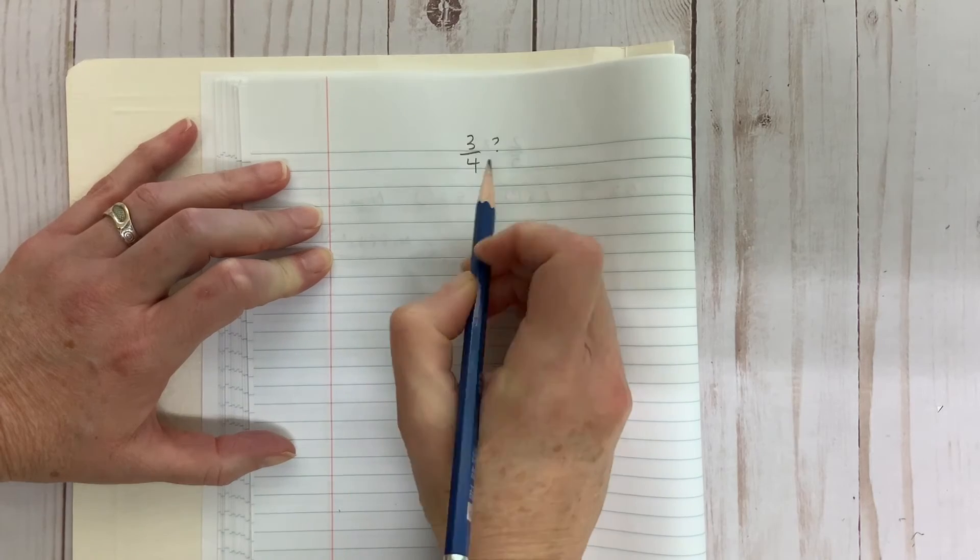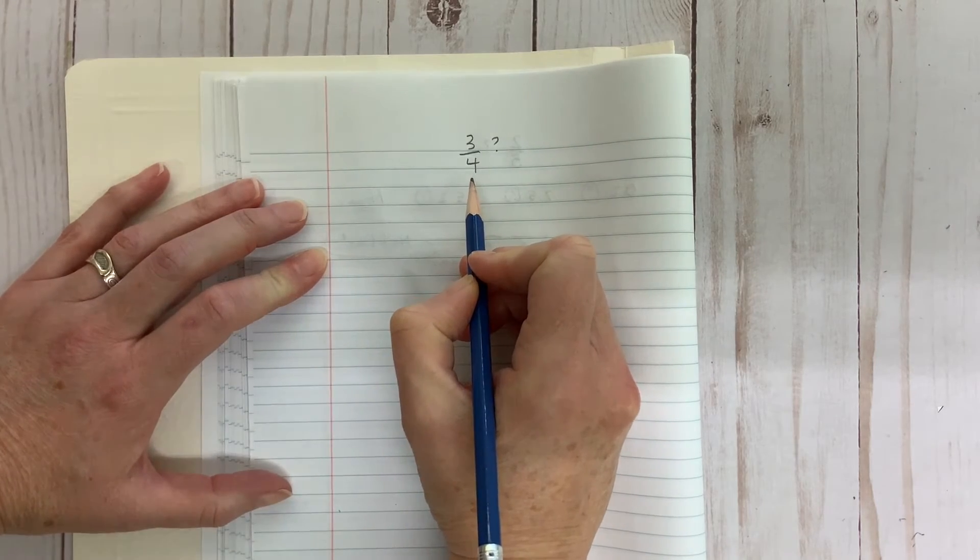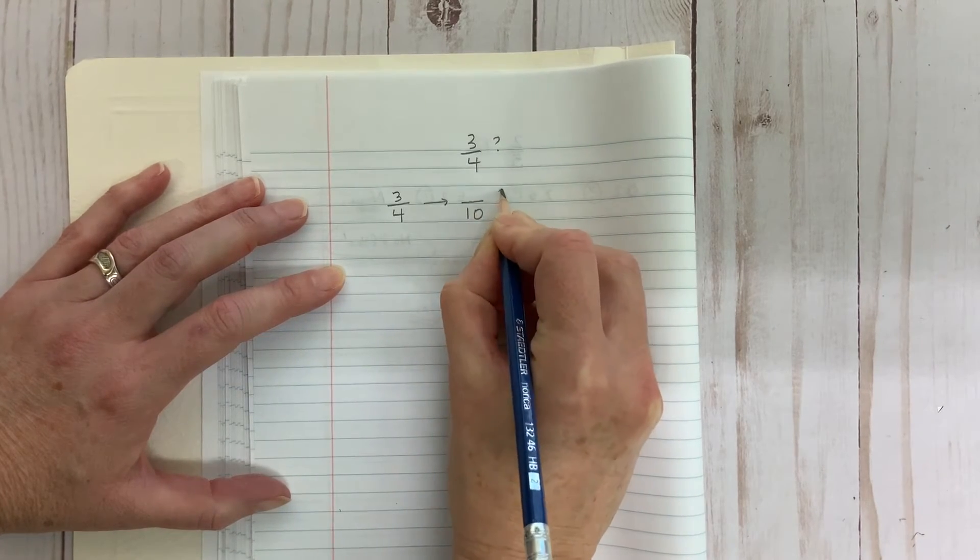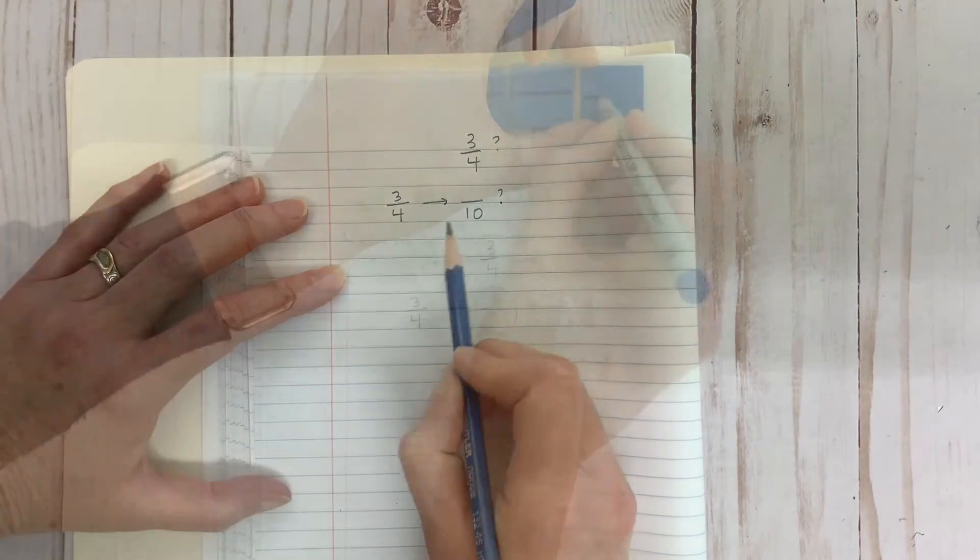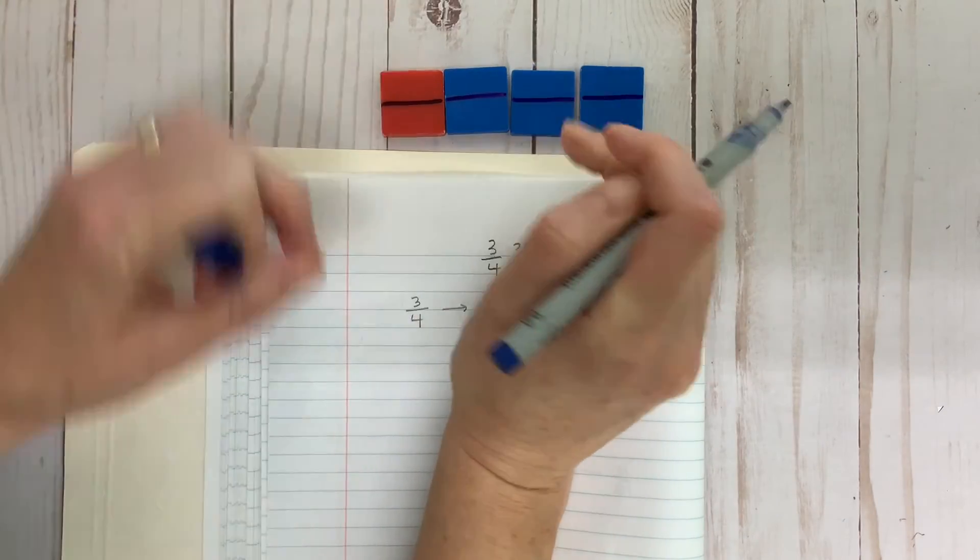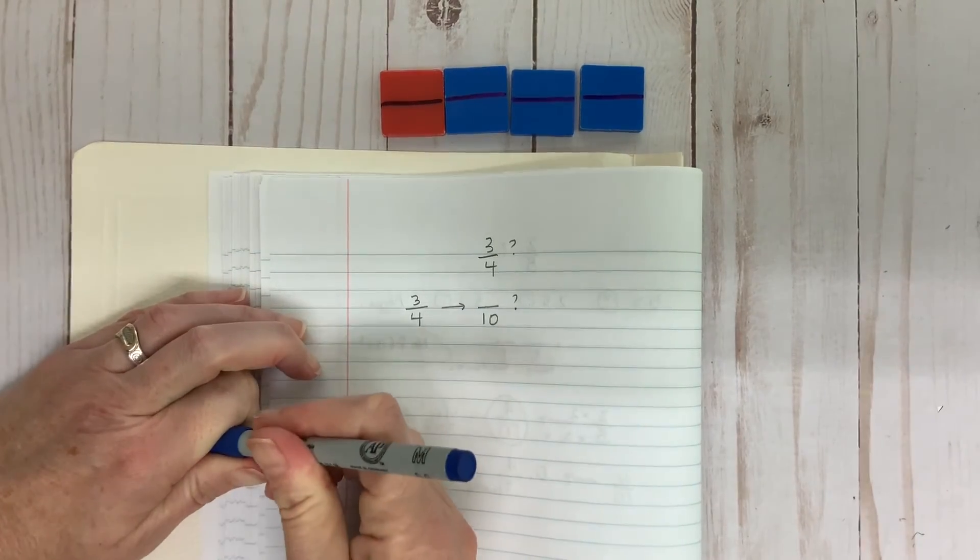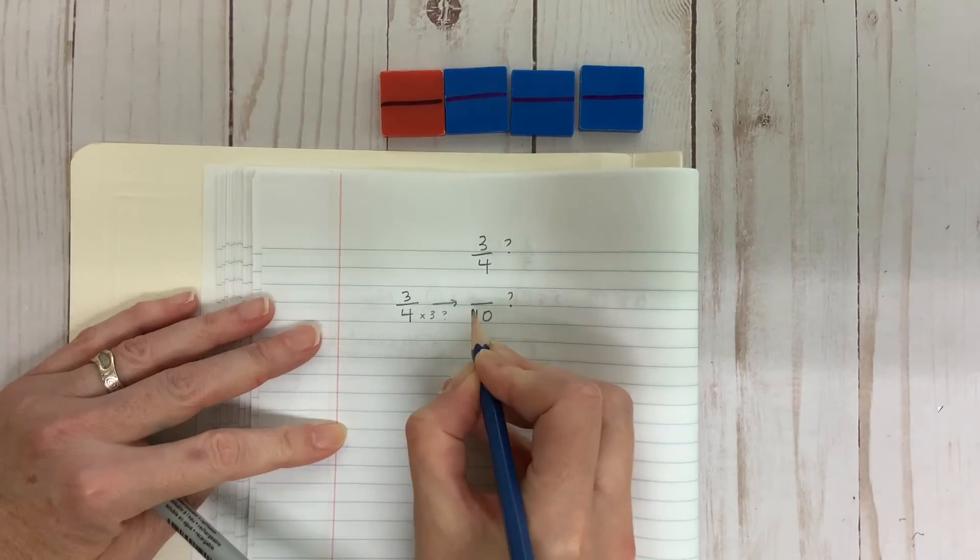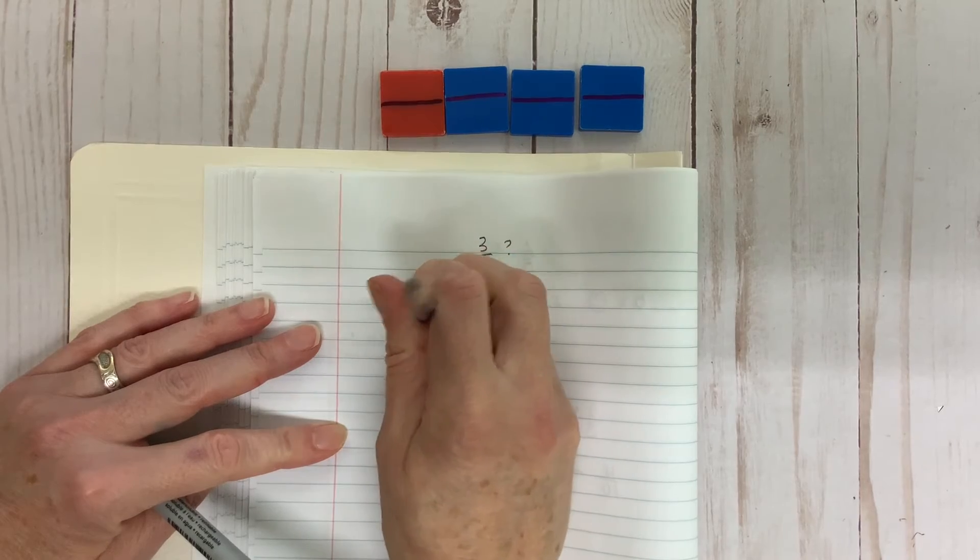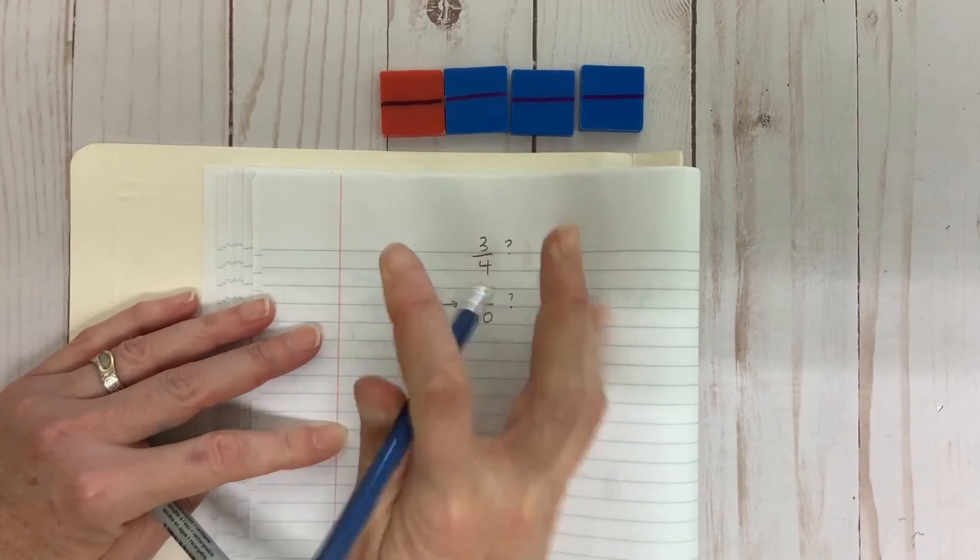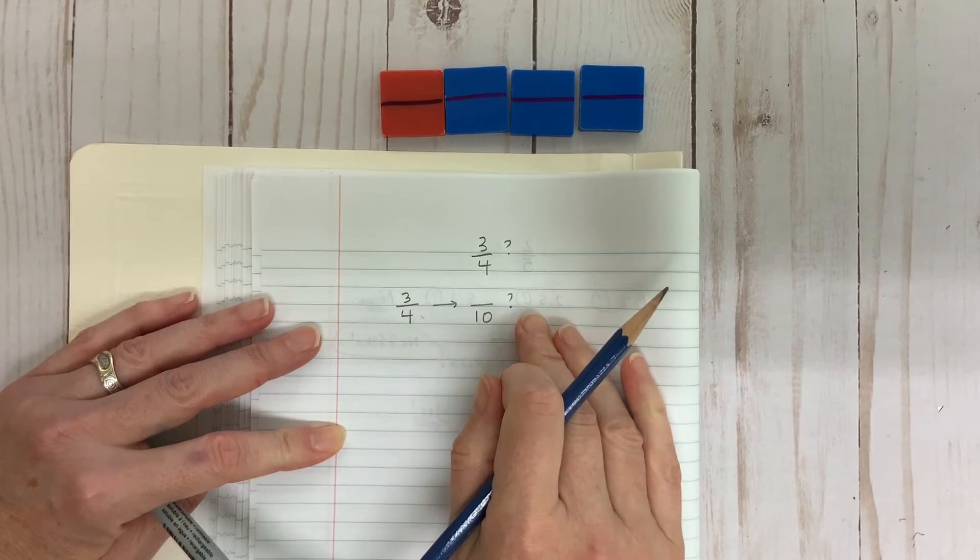Let's try another one. How about three quarters? Can this be written as an equivalent tenth? If I try to double four, I end up with eight, so that doesn't work. If I triple it, I end up with twelve, so no. Doesn't seem like we can find an equivalent fraction of tenths.